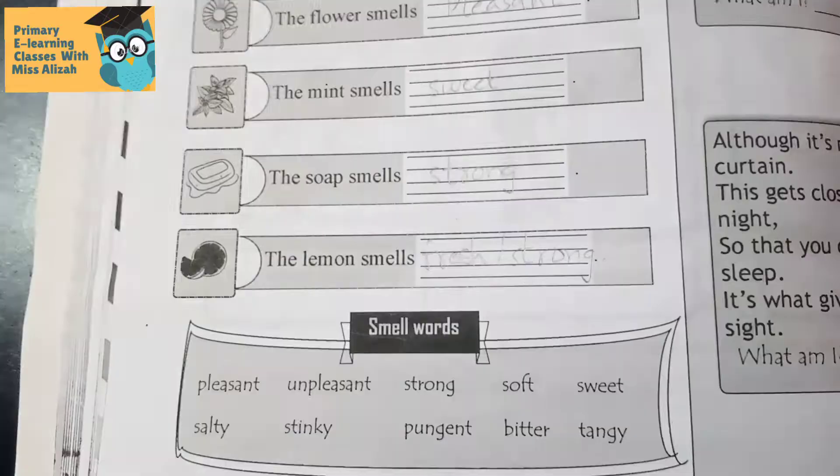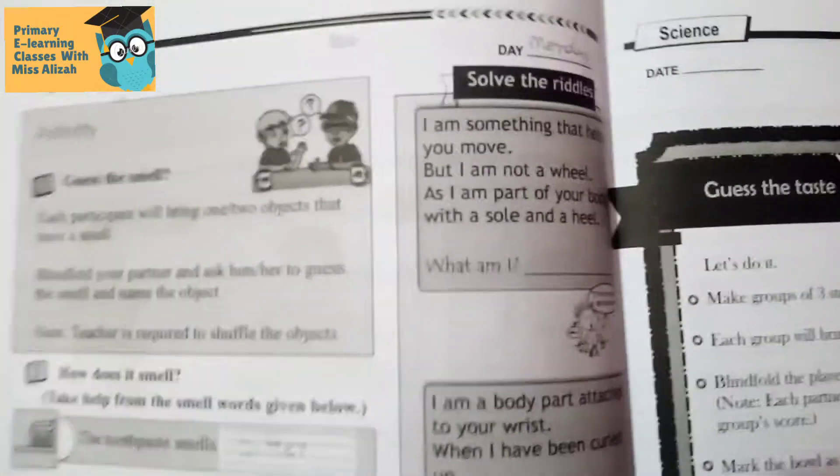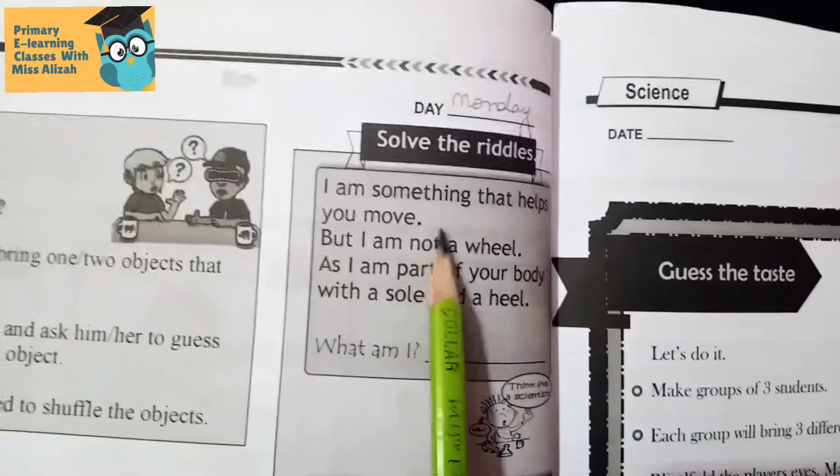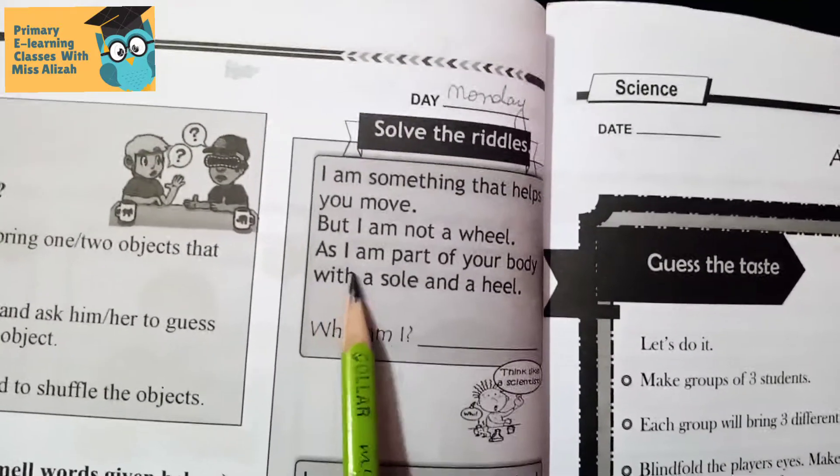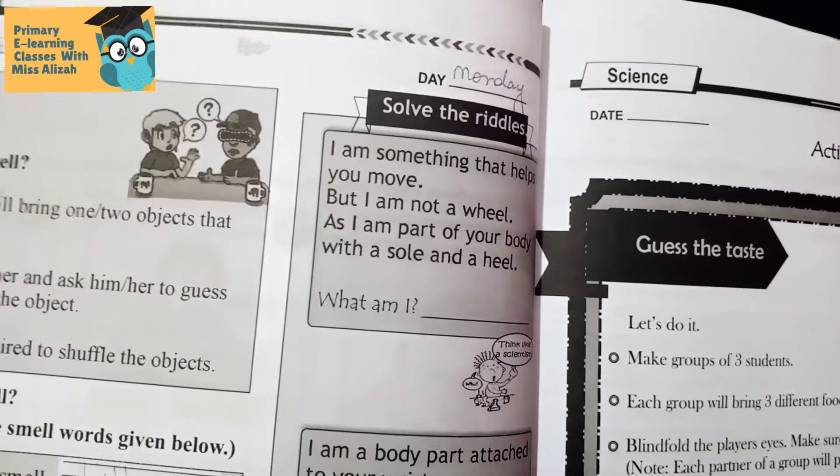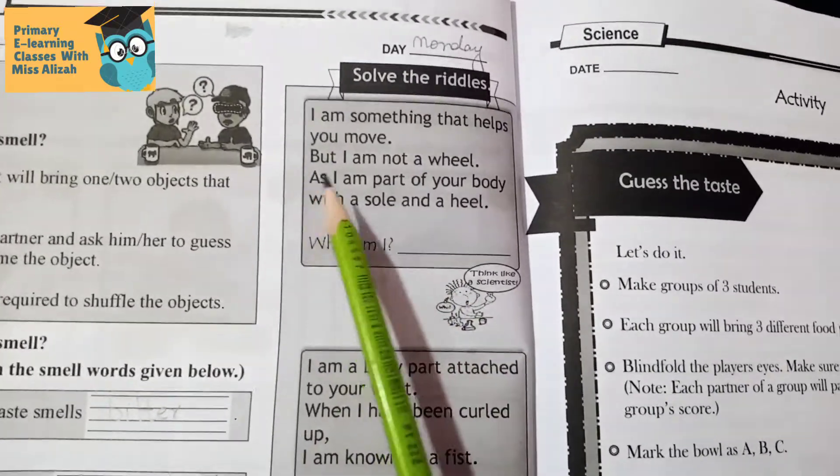Now come to the riddles. Solve this riddle: I'm something that helps you move, but I'm not a wheel. As I am part of your body with a sole and a heel, what am I? What kind of body part helps us move? Our feet.